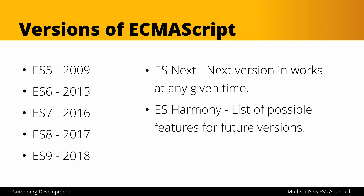There is also something called ESHarmony, which is a list of possible features for future versions. The way this new cycle works is that they have a bucket list of ideas, pull out what they can each year, release that, and then reassess what's going to come next.